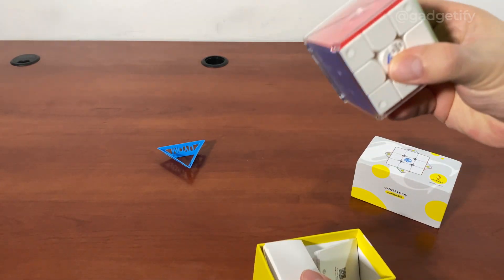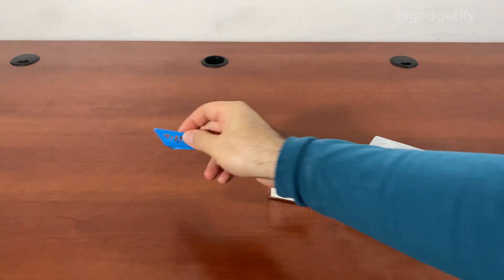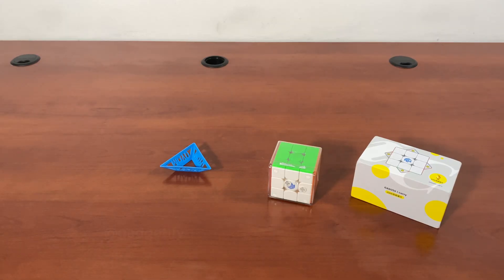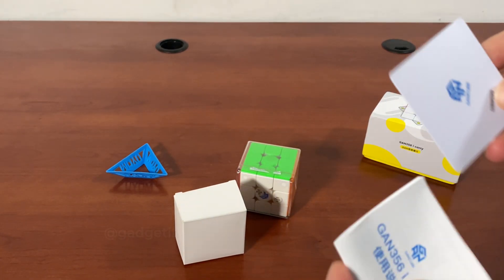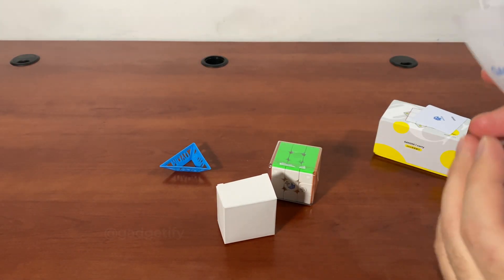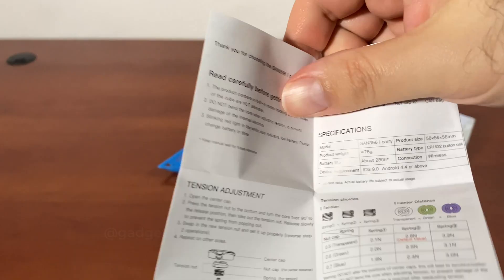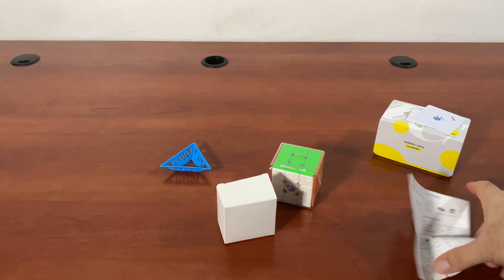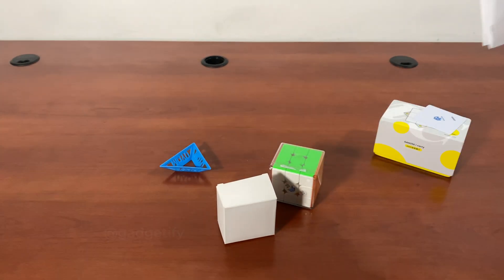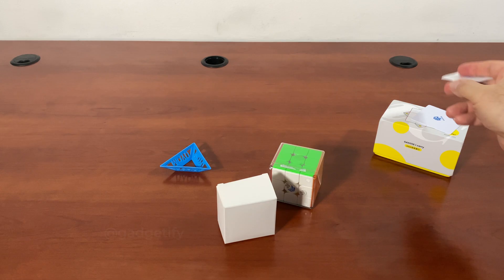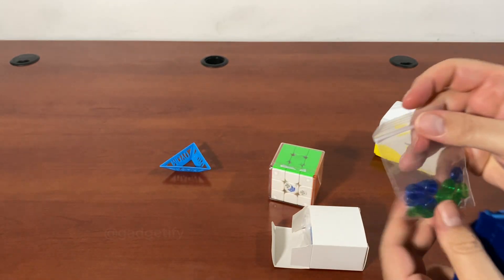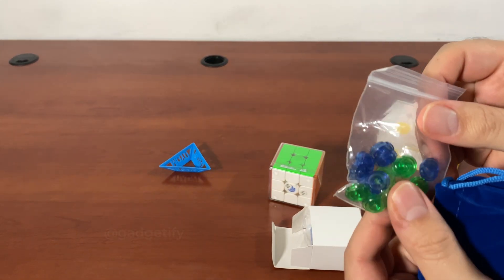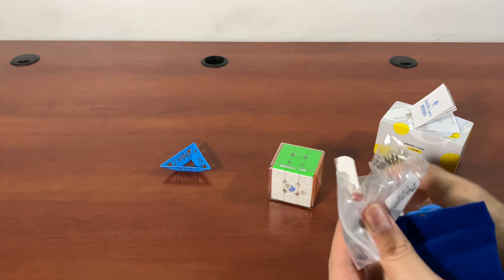So you get a bunch of stuff with the cube. First of all you get this that you can use as a stand. You get this guide. The guide actually has English instructions, use this with an iOS and Android device. It works with Cube Station app. There's a QR code here that you can scan or you can just go to the app store and find it easily. So you get the carrying case, get these, a bunch of stuff for tension adjustment.